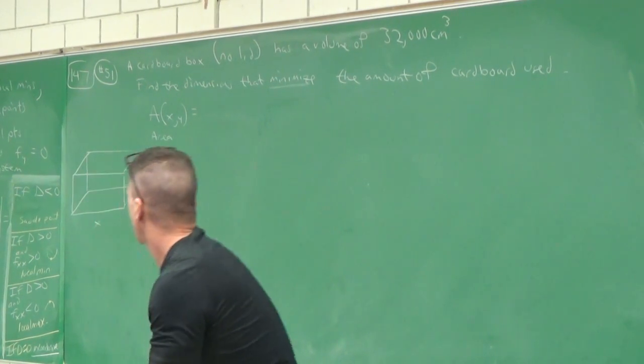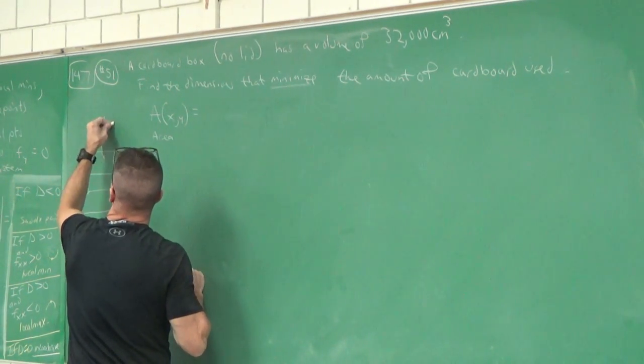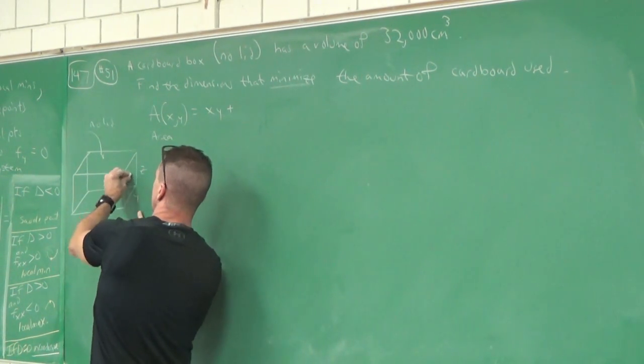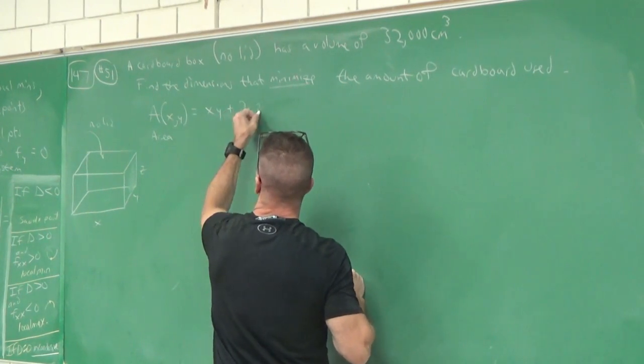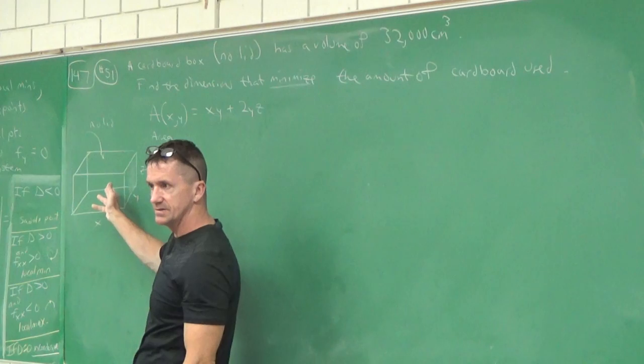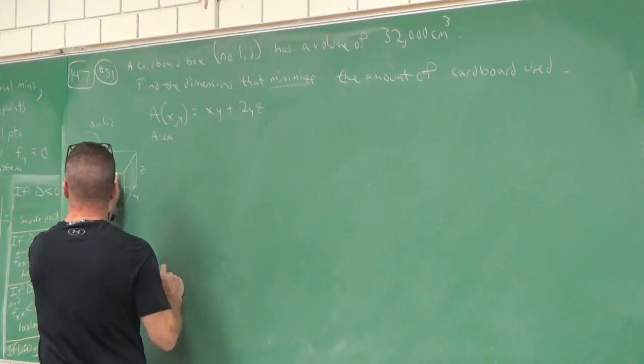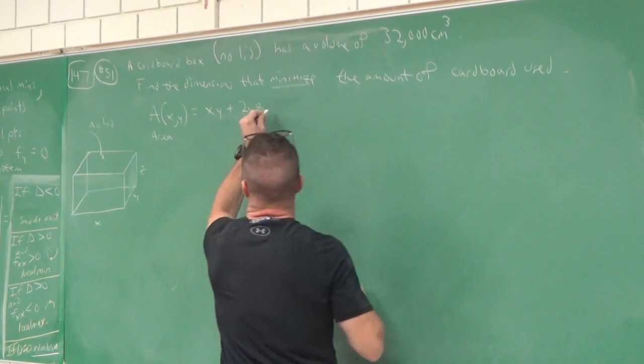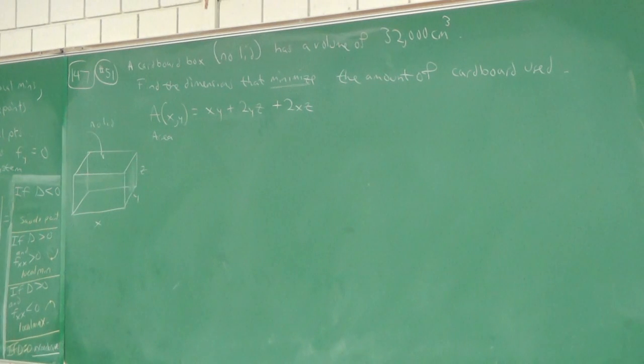We should draw a picture. Here's a box. If I use x, y, and z - different from calc one, they didn't say square base, so I'll call that y and the height z. What's the surface area? Let's start with the base. The area of that base is xy. There's no lid. Plus two sides: area yz, and there's two of them, so 2yz. And the other two sides are xz, so plus 2xz. There's the area function.